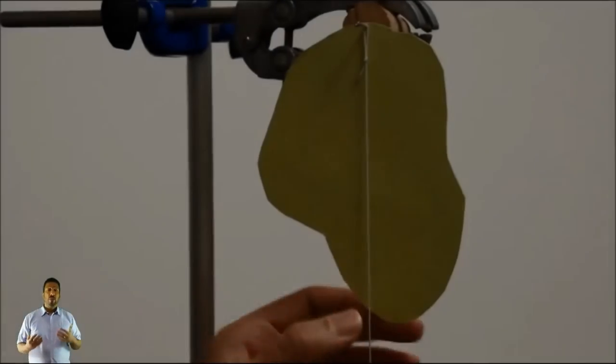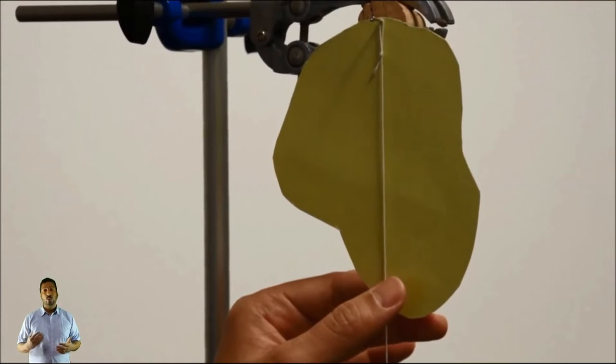Let's take a look at this clip that shows the plumb line method. These are the steps to determine the center of gravity of an irregularly shaped object, also known as a laminar.